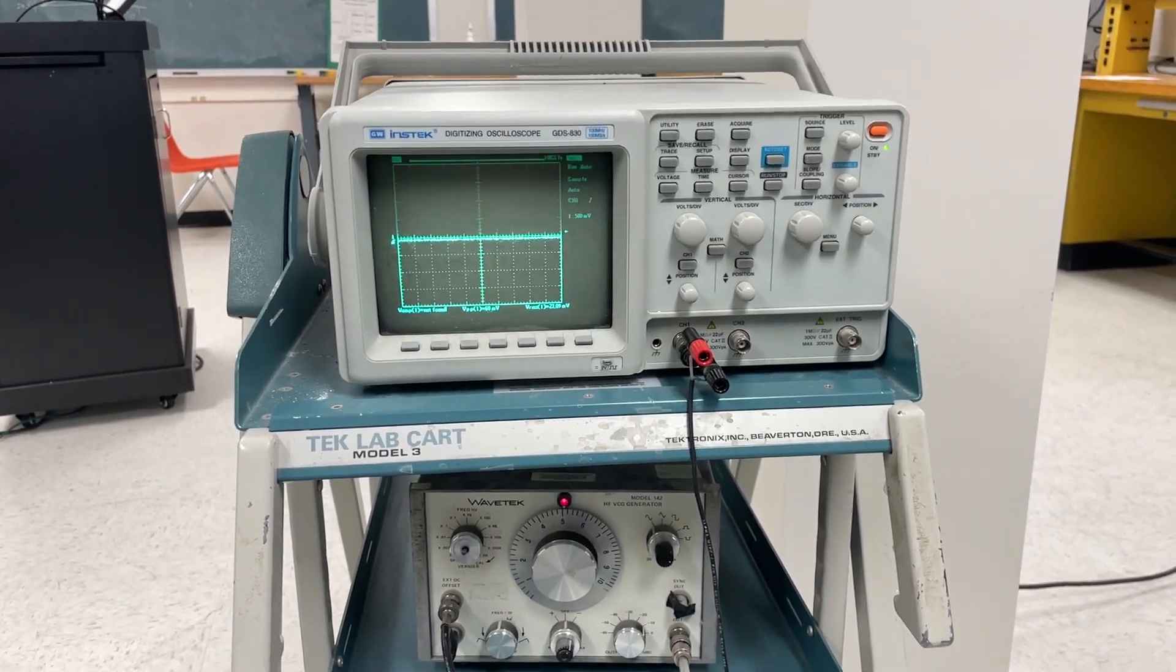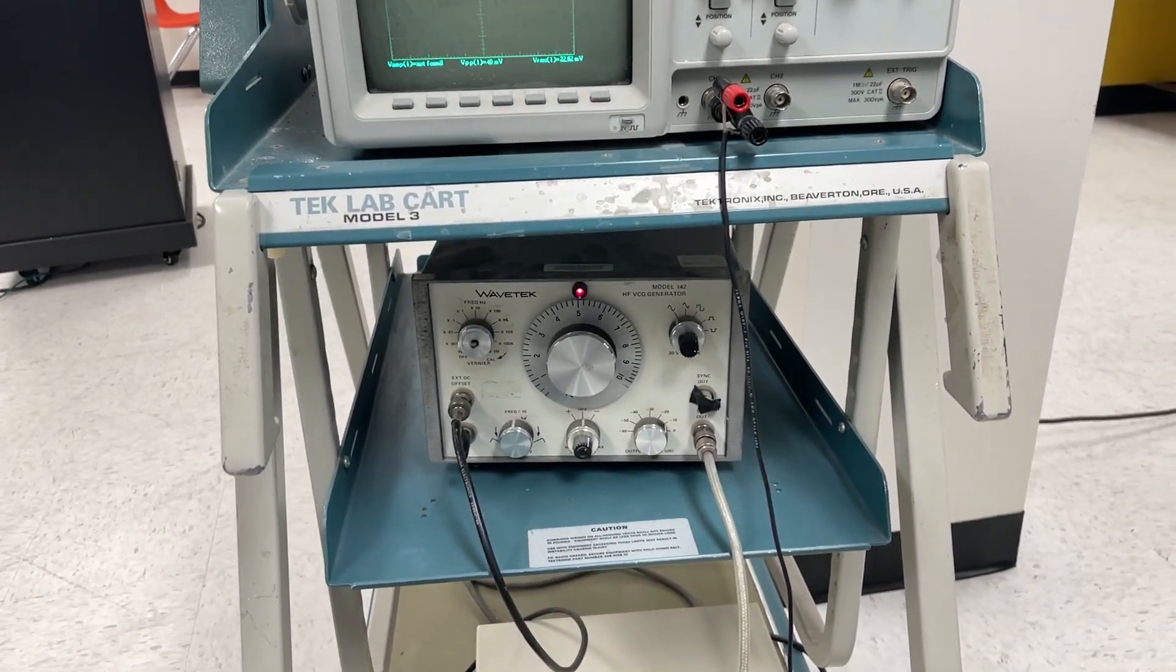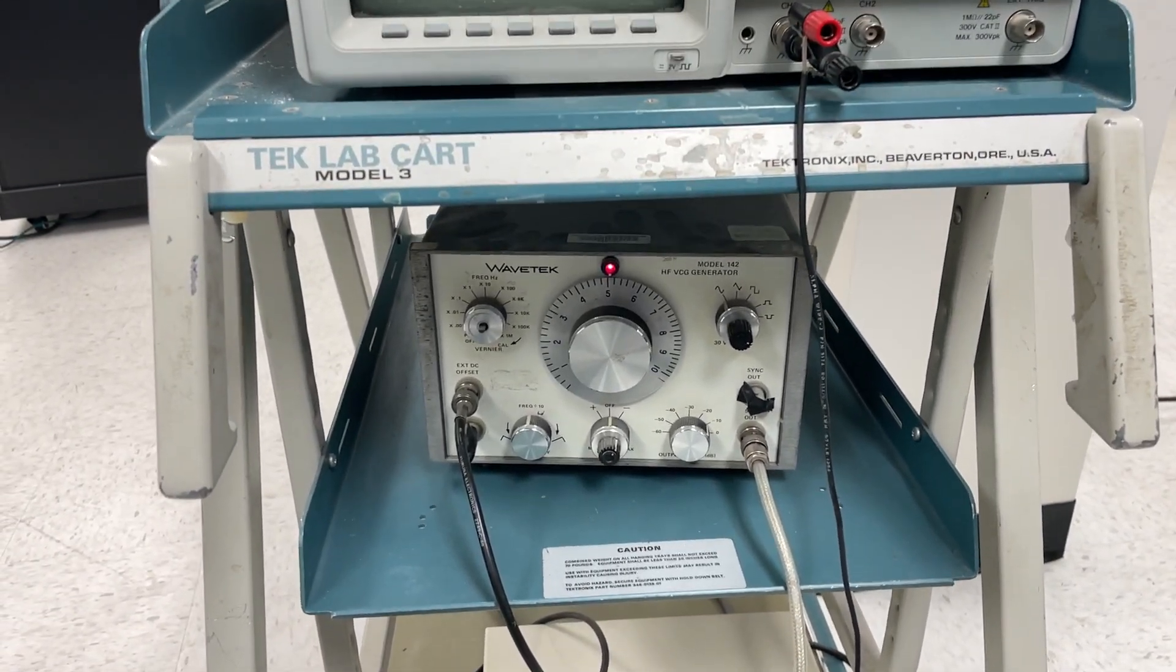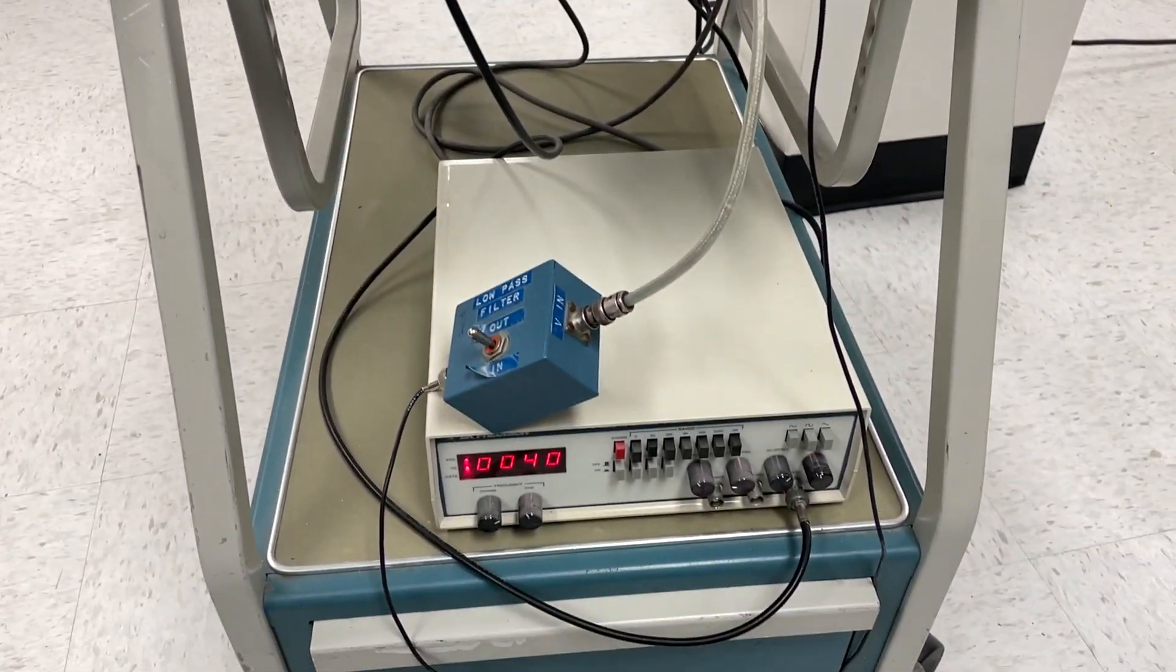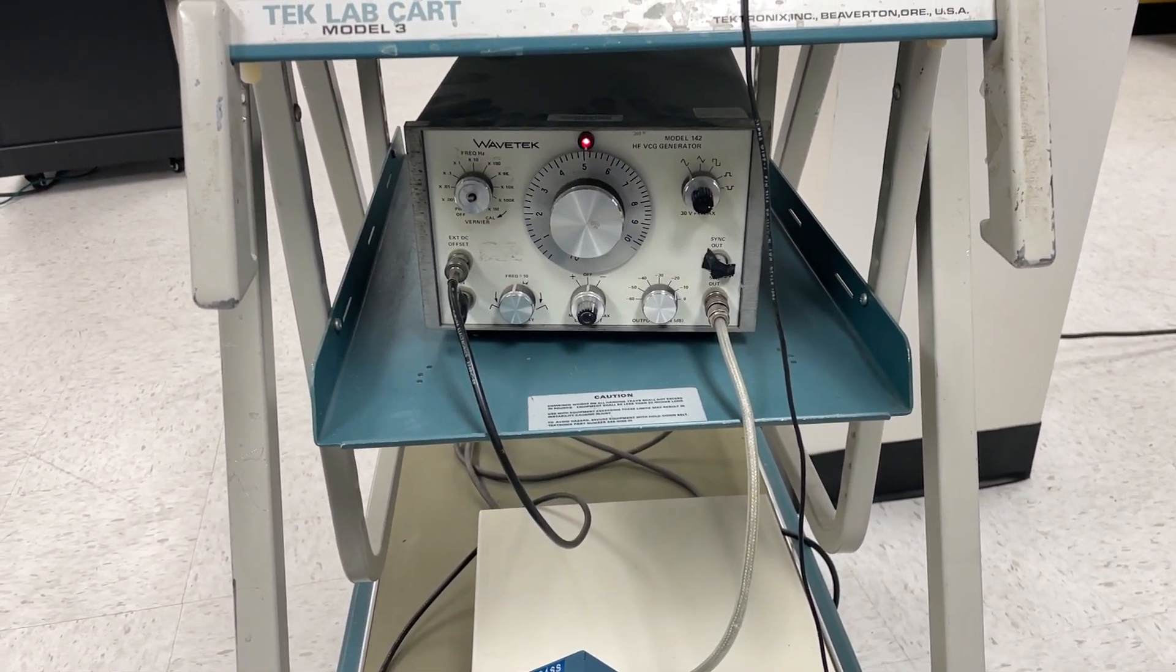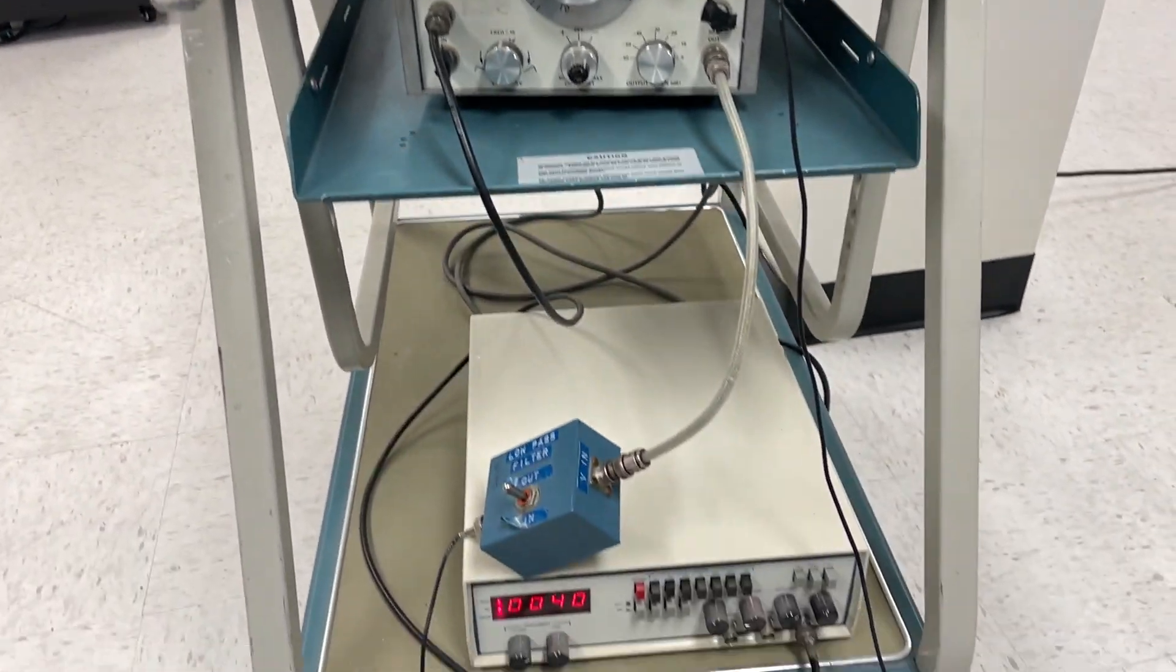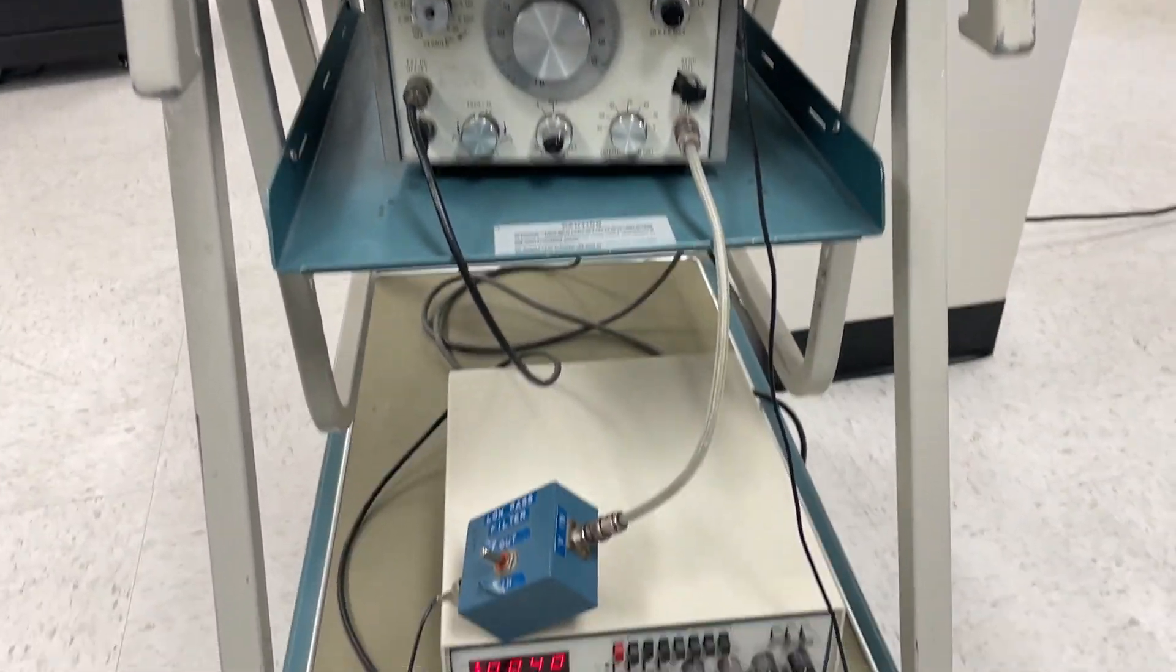This is set up to demonstrate the low-pass filter. What I have here are two function generators. So this is an old function generator and I have another function generator. With the two of them I can connect them such that the output is an algebraic sum of the two function generator outputs.